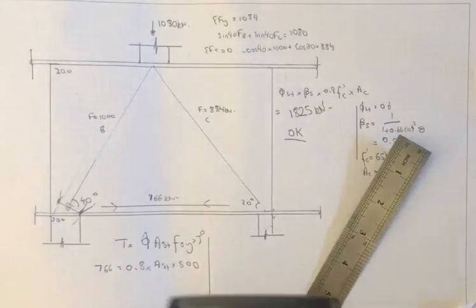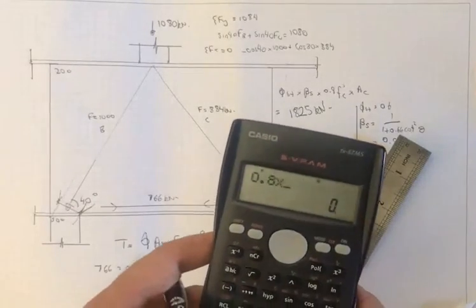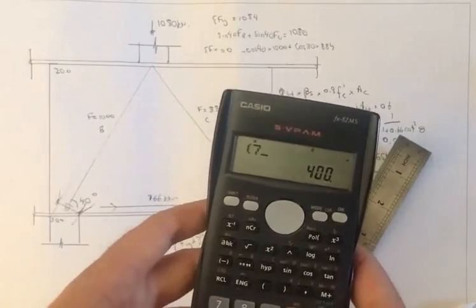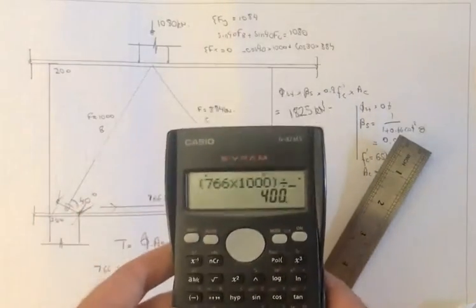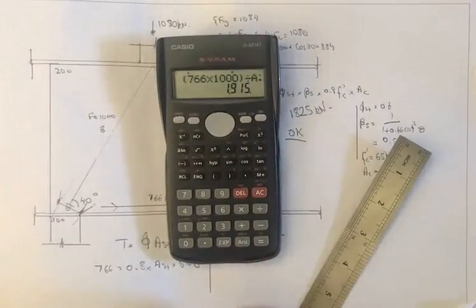So 0.8 times 500 and 766 kilonewtons, it's 1,000 divided by, so we need 1915 millimetres squared.